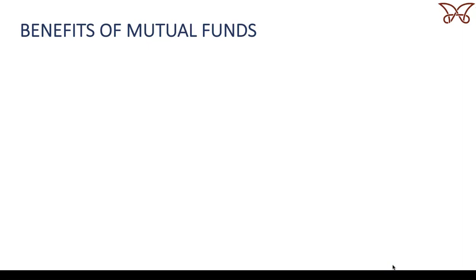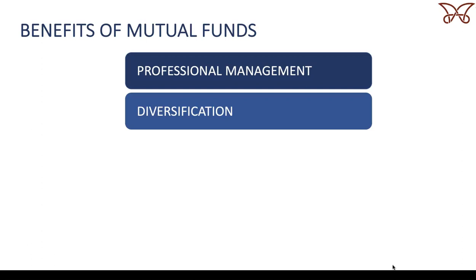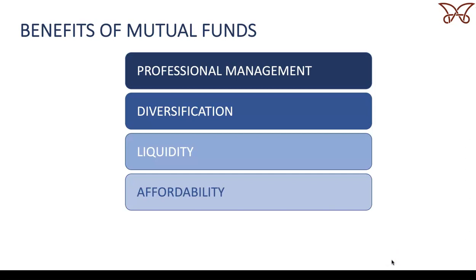Mutual funds are a popular investment option because they offer: first, professional management — by pooling money, funds can afford to hire top-notch managers, some with large teams of researchers and analysts; second, diversification — many funds own hundreds of individual securities, allowing investors to build fully diversified portfolios with just one or two mutual funds, lowering overall risk; third, liquidity — you can usually buy or sell fund shares on any day the market is open; and fourth, affordability — many funds let you invest with only a few hundred or thousand dollars to start, and the cheapest funds cost only pennies for every hundred dollars you invest.